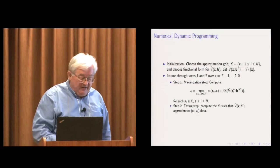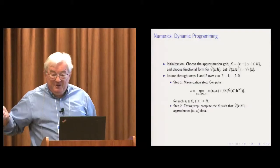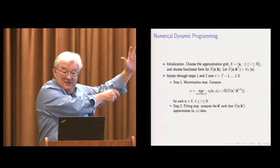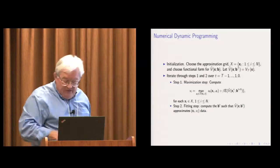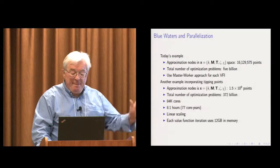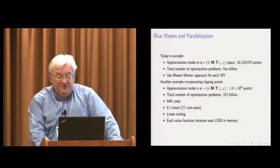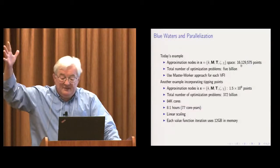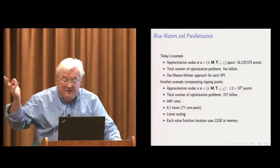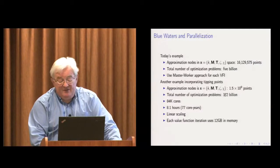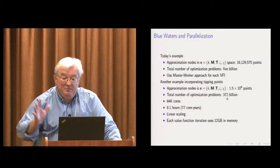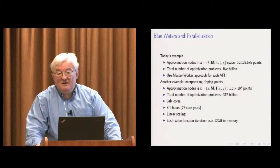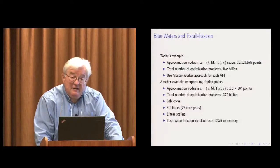This is naturally parallelizable. After you've done the value function for time t+1, the individual optimization problems at time t can be done independently, but then you have a parallel sync block. On Blue Waters, we need this. The problem shown today is a bit on the small side — we solve an optimization problem at 16 million points at each time period, for a total of 5 billion optimization problems. There's another version with stochastic tipping points: over a billion points, 372 billion optimization problems, 84,000 cores, 77 core-years of time, linear scaling. This can make full use of parallel resources.